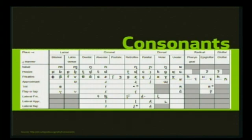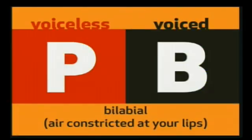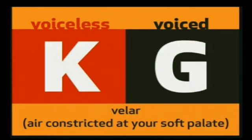Consonants are created when there's an obstruction of the airflow in your mouth. Consonants can be described by where the constriction of airflow takes place — whether it's in the front of your mouth, your lips, your teeth, or the back of your throat. For example, P and B. The only difference between these two is whether your vocal cords are involved. P is voiceless and B is voiced — both happen at your lips. On the other hand, K and G: they're the same sound other than the vocal cords being involved. K happens at the back of your mouth, at your soft palate. G is the same place, but your vocal cords are vibrating.